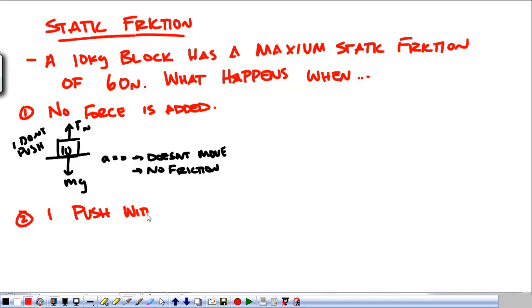Let's say I push with 40 newtons. What's going to happen then? Our 10-kilogram object has the weight down, it has the normal force up, and I am applying a force of 40 newtons to it. We have a couple options as to what static friction can do. Option one is that static friction pushes back with 60 newtons. Option two is that static friction pushes back with 40 newtons.